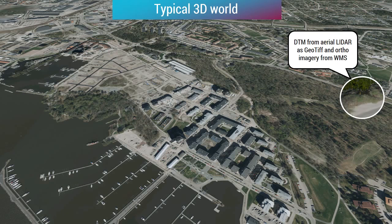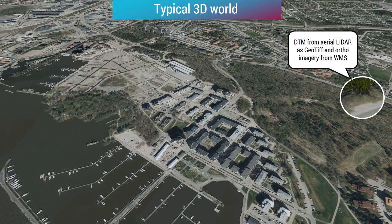You'll have a terrain model that comes from maybe an aerial scan of the area provided as a GeoTIFF, and then ortho imagery maybe provided from a WMS service, and that creates the base — the terrain with the textured ortho image on top of it.